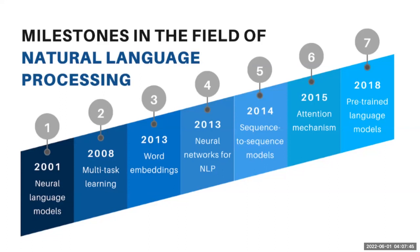Up until the 80s, progress in NLP was theoretical work on how to represent meaning in computers. Then in the 80s, tokens — meaning small units of a text such as words, phonemes, and characters — were invented to establish a relationship in text to be used in algorithms. Statistical models revolutionized NLP in the 80s and 90s, thanks to machine learning algorithms and increased computational power.